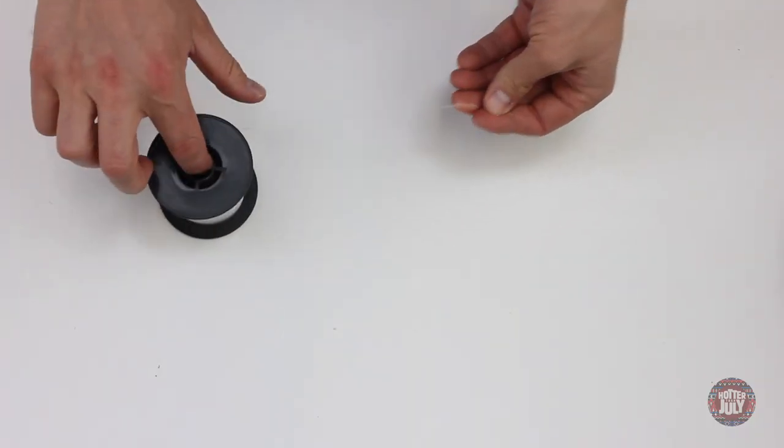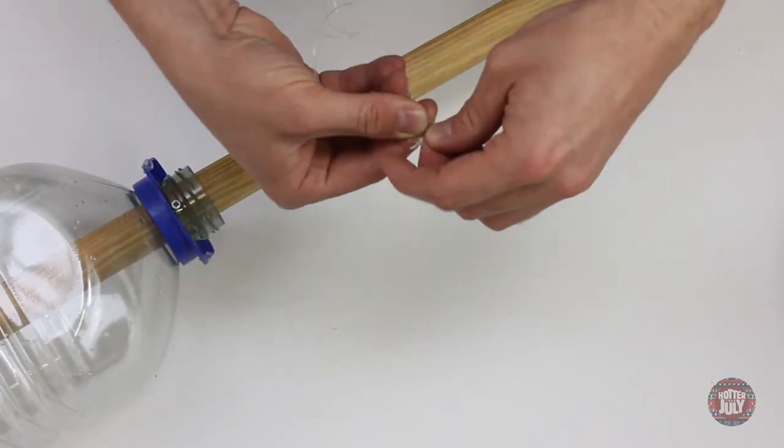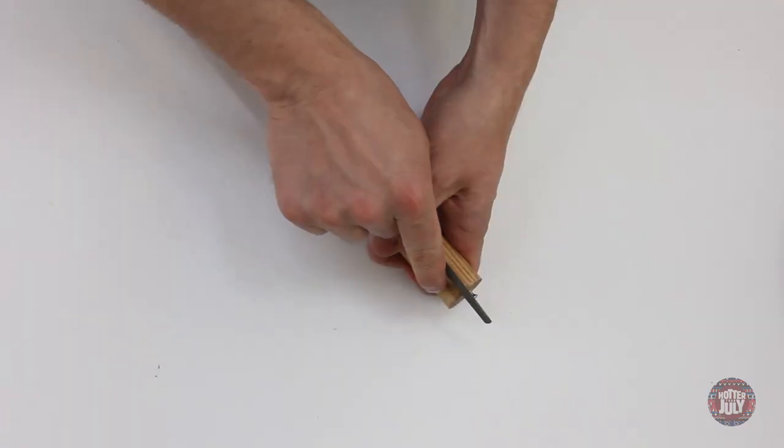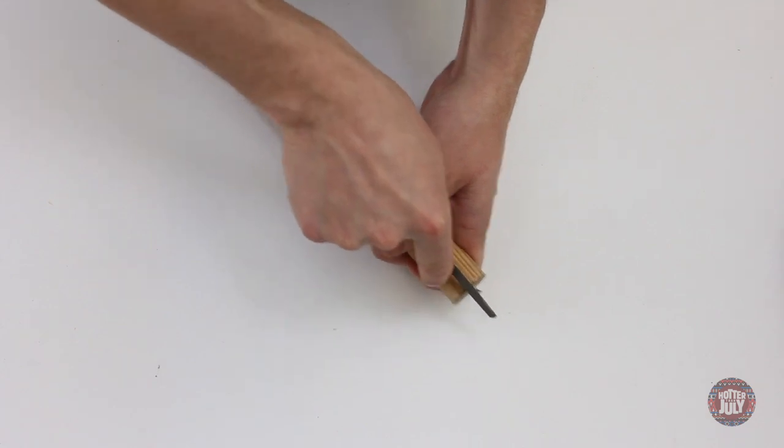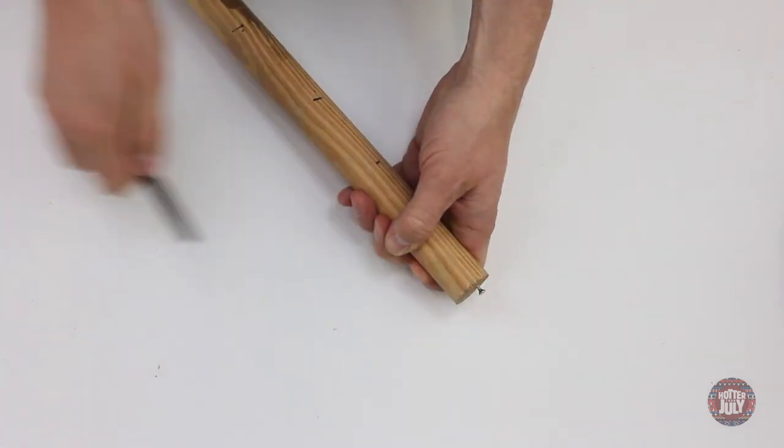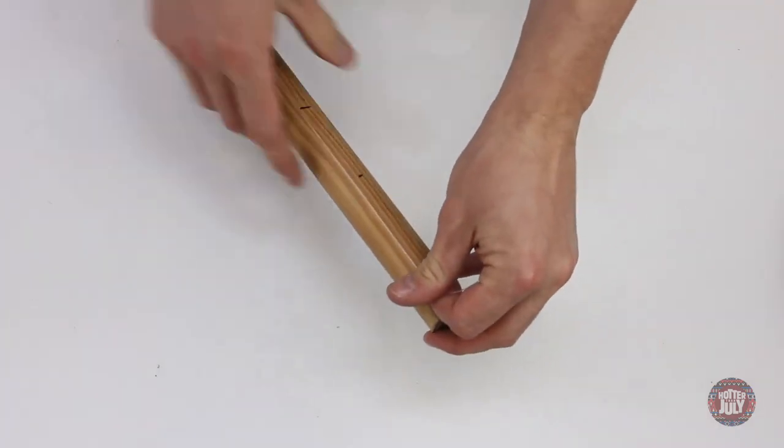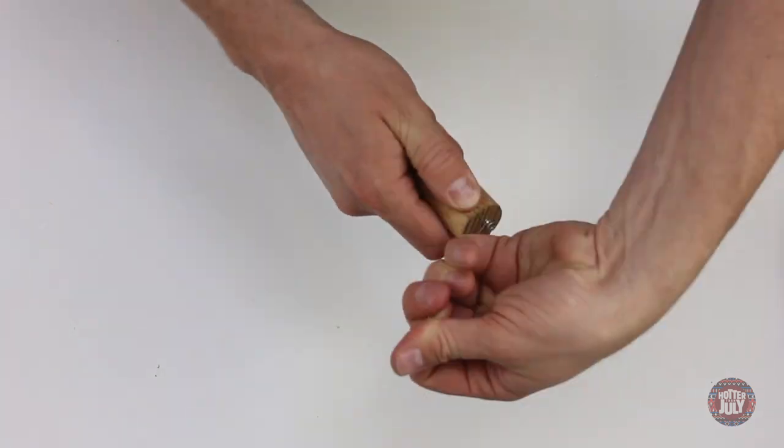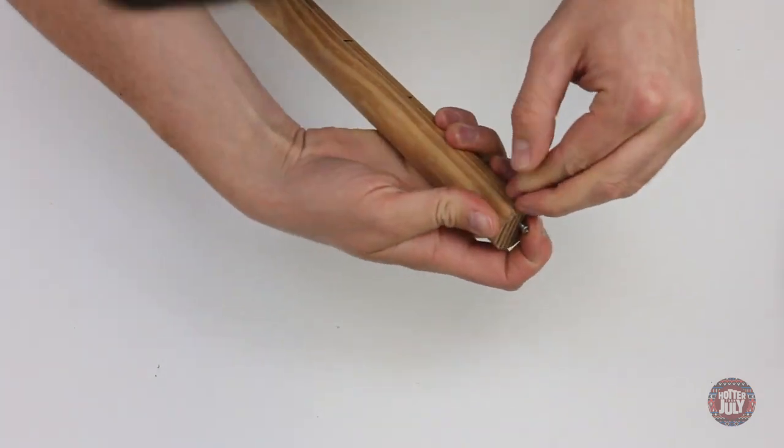Measure out a length of fishing line for the string. Tie a loop at one end of this and pull it over the body end screw. File or otherwise indent a small groove for the string to sit in at the other end of the stick and with the string roughly tensioned, wrap it a few times around the end screw before tying with a double knot.